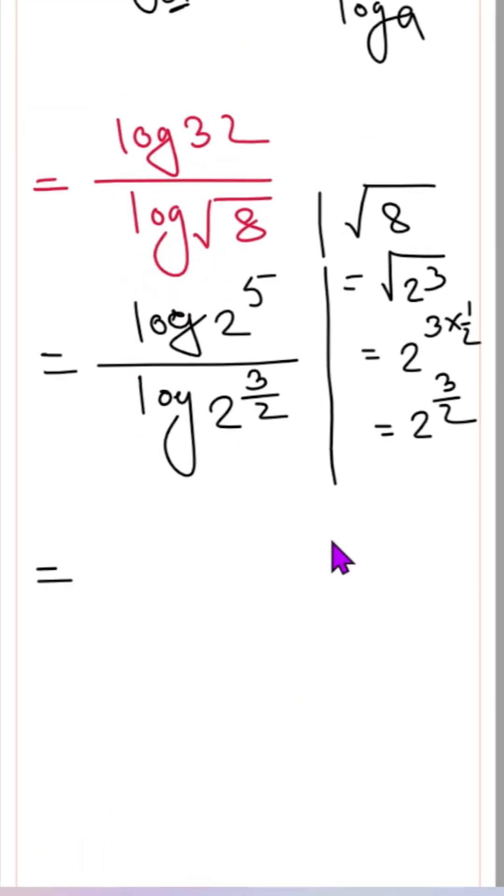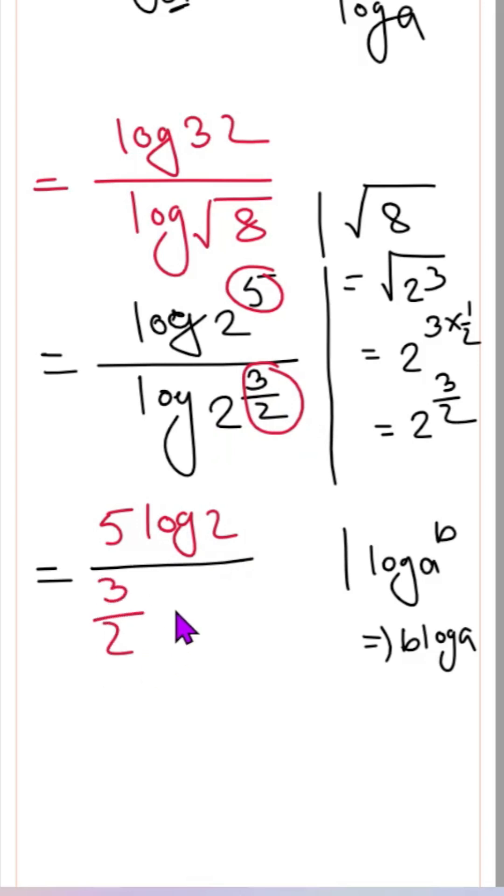We know the property log a to the power b equals b log a. So this 5 we can write as 5 log 2, and this 3/2 we can write as 3/2 log 2. The log 2 cancels out, leaving 5 divided by 3/2.